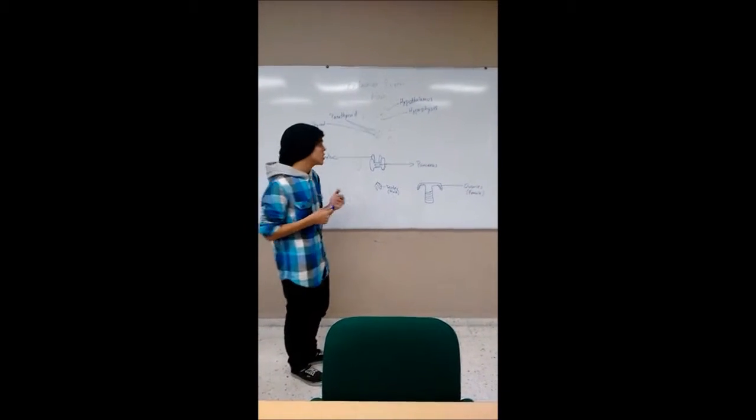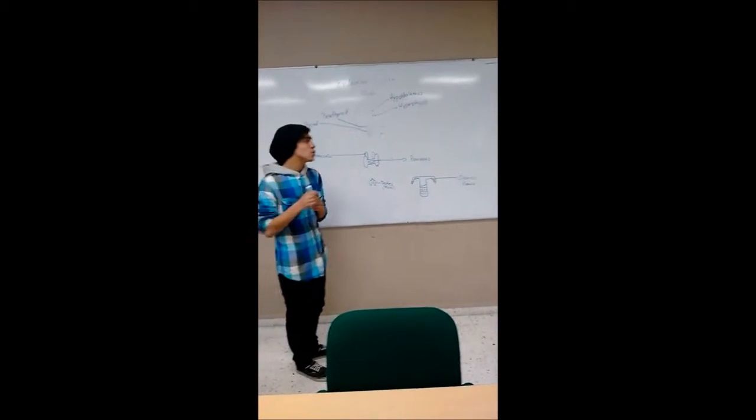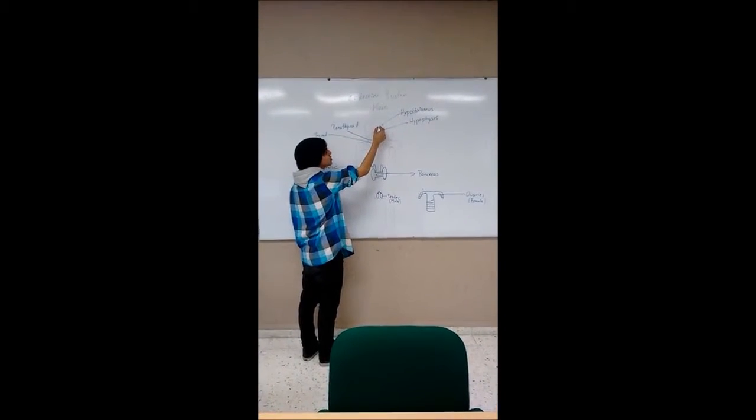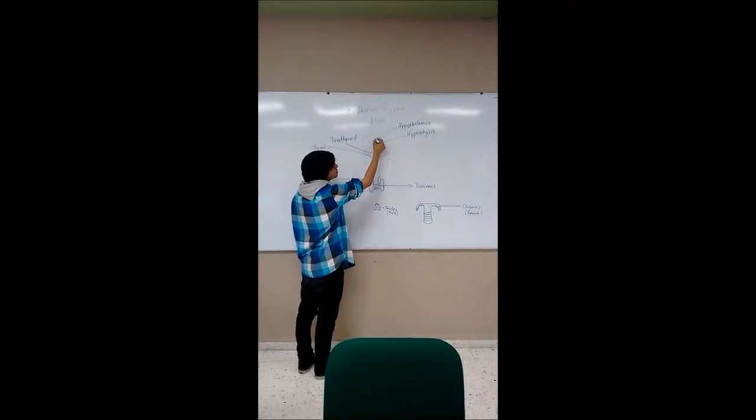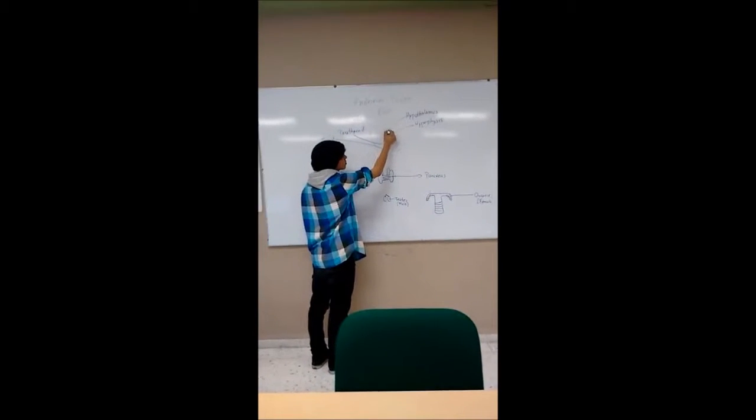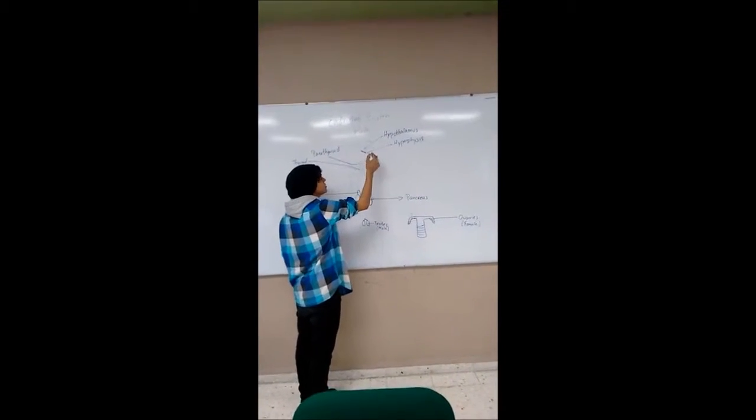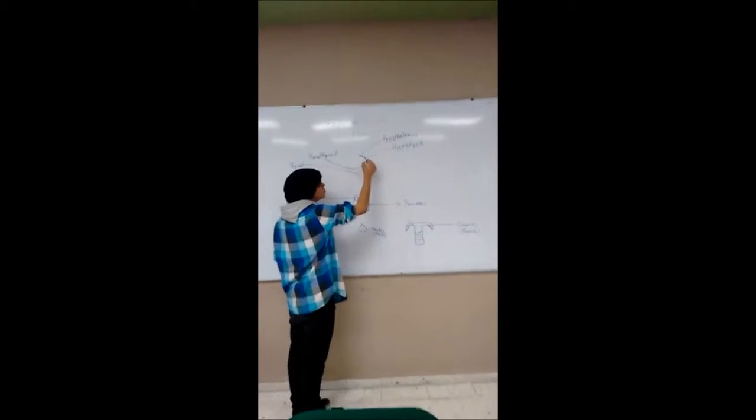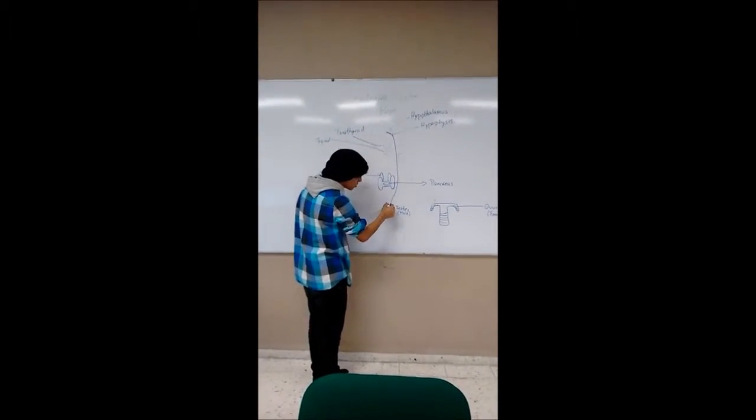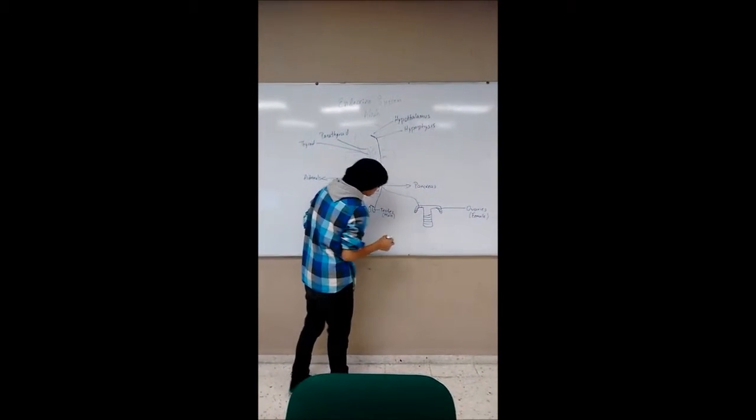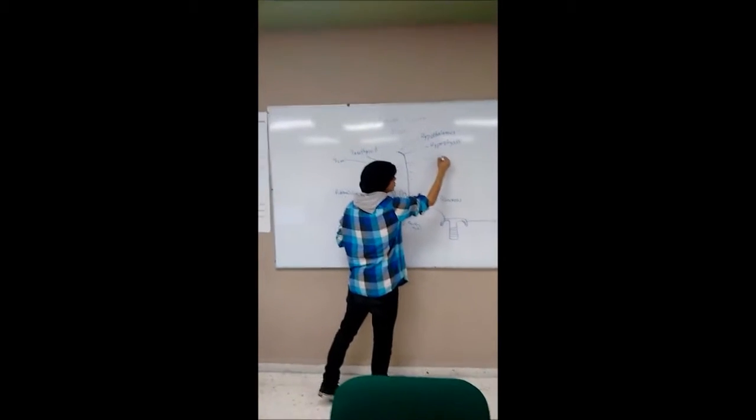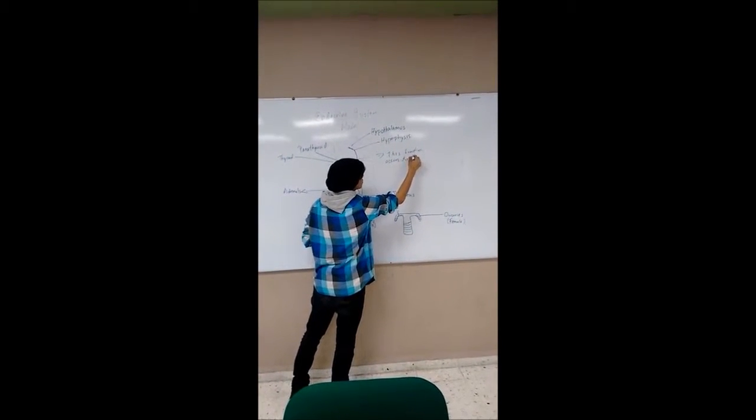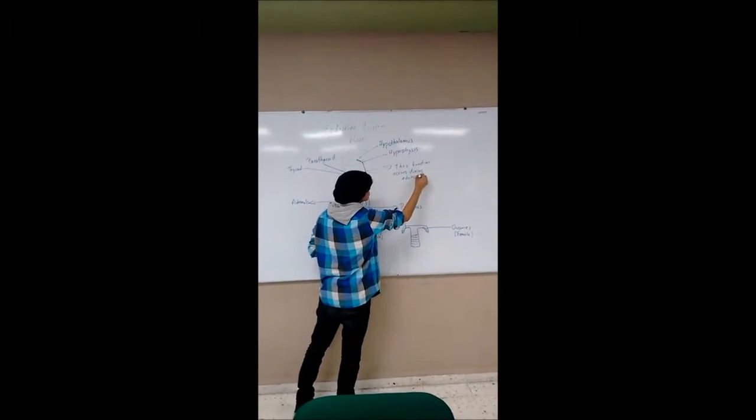Here I explain the following model where we have the hypothalamus and the hypophysis. The hypophysis sends the function to the testes or the ovaries. This function occurs during adolescence.